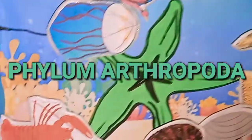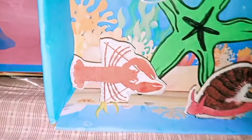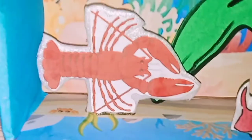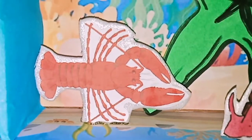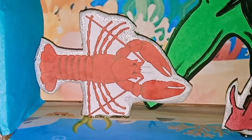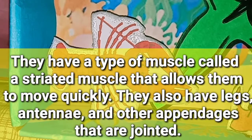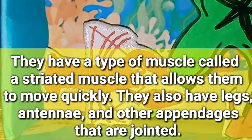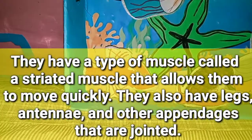Phylum Arthropoda: Arthropods are the most numerous invertebrate phylum with over 1 million species identified. Some scientists expect there may be as many as 10 million arthropod species on Earth. All arthropods have a strong external skeleton that protects them from predation and supports their body structures. They have a type of muscle called striated muscle that allows them to move quickly. They also have legs, antennae, and other jointed appendages.